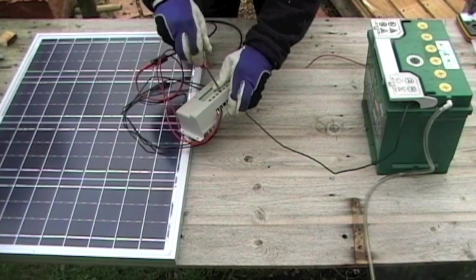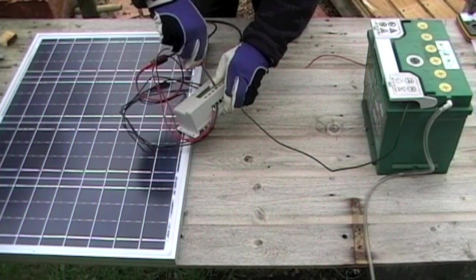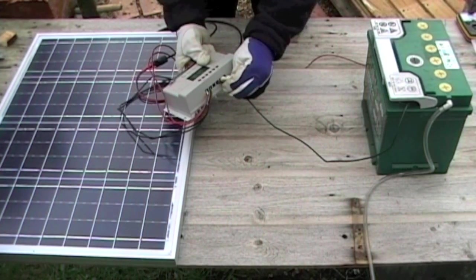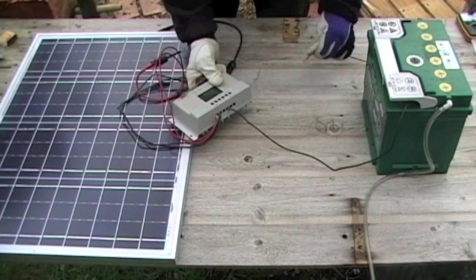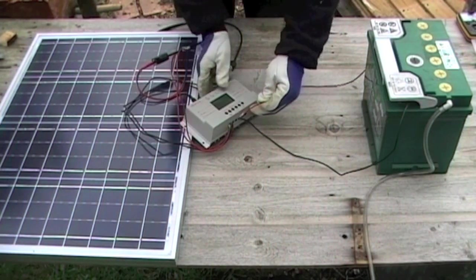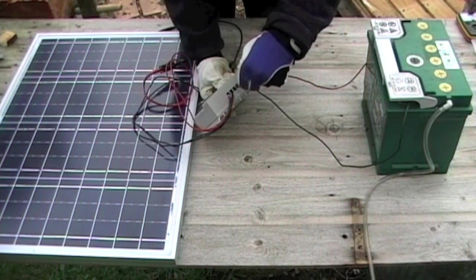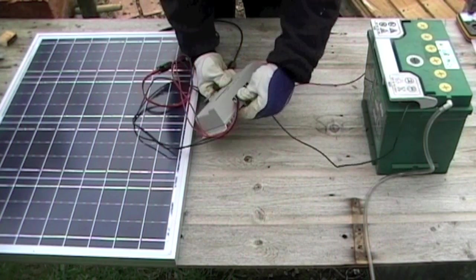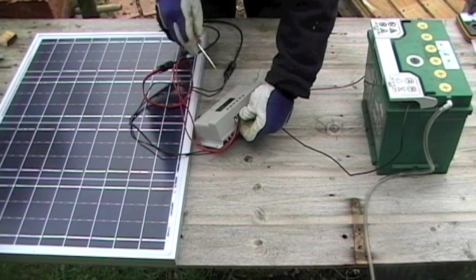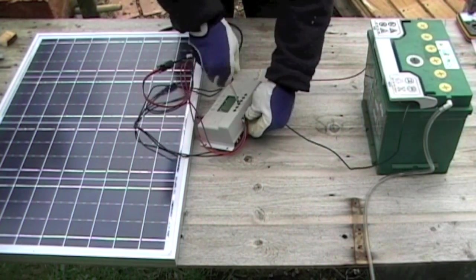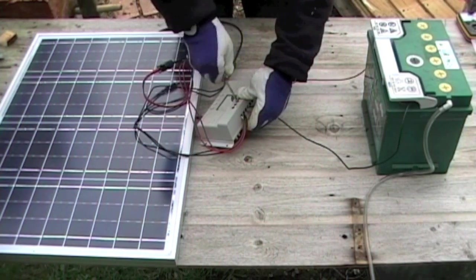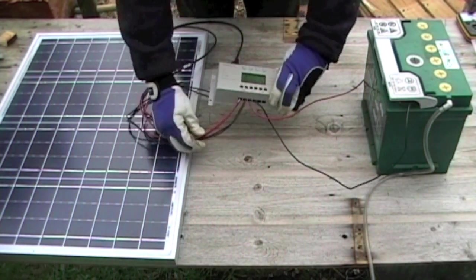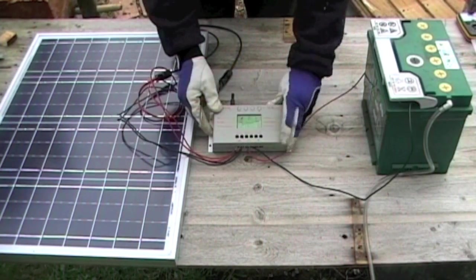And tighten up the screw. That's good and tight. And then the same for the positive wire. There, the display on the charge controller has come on. So that's working too.